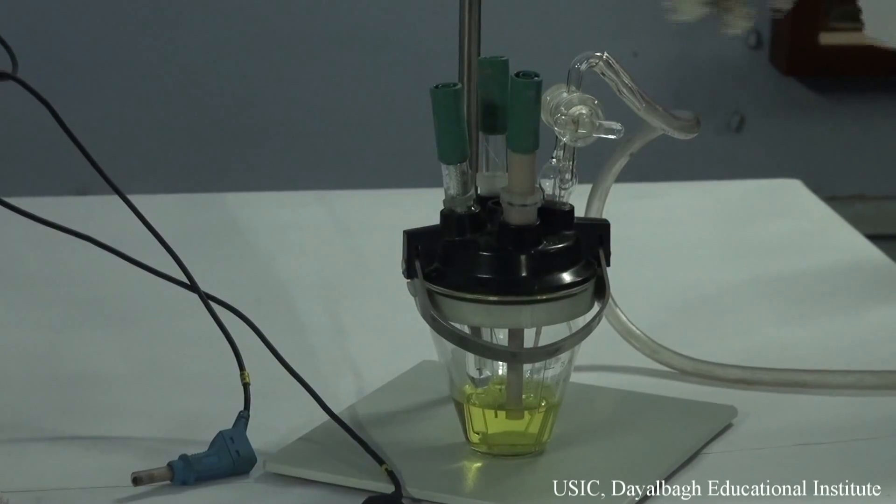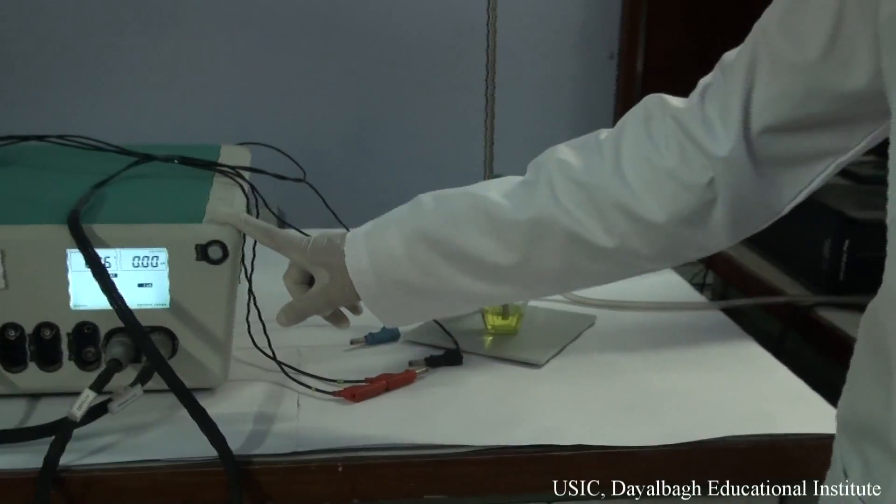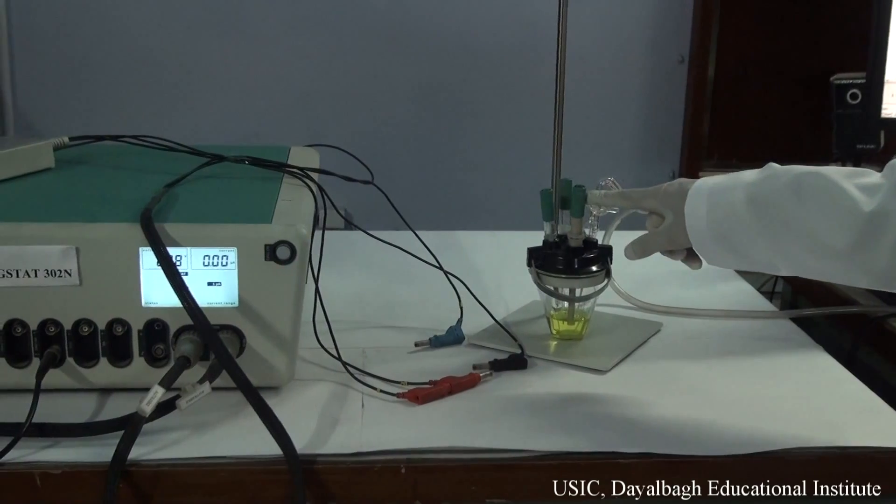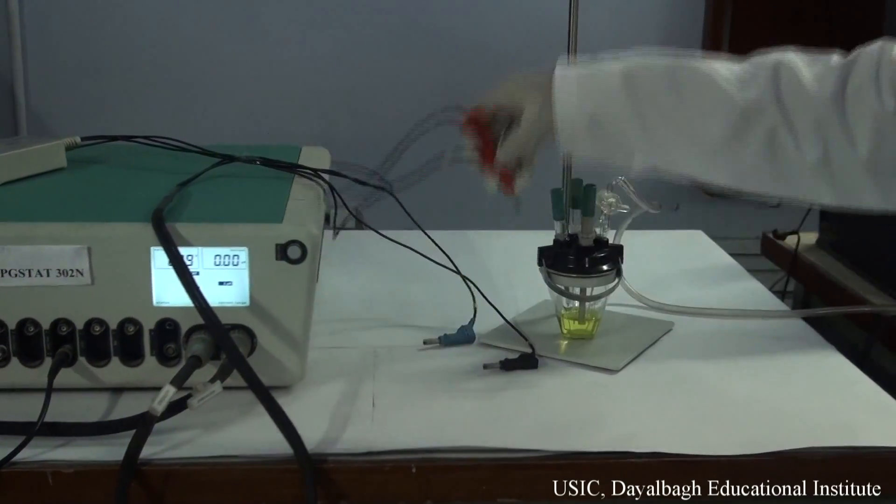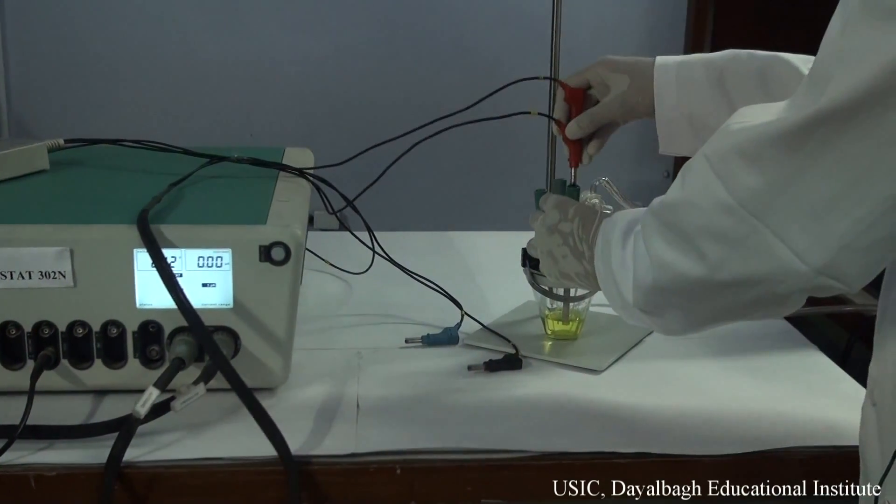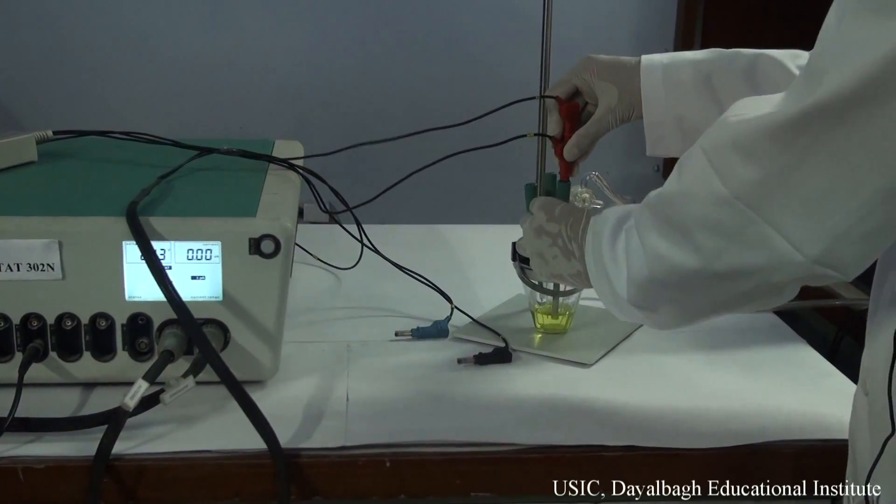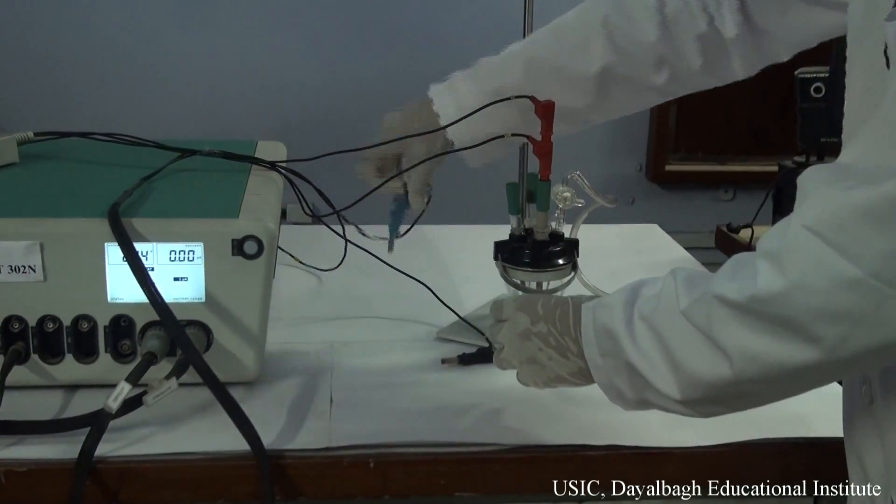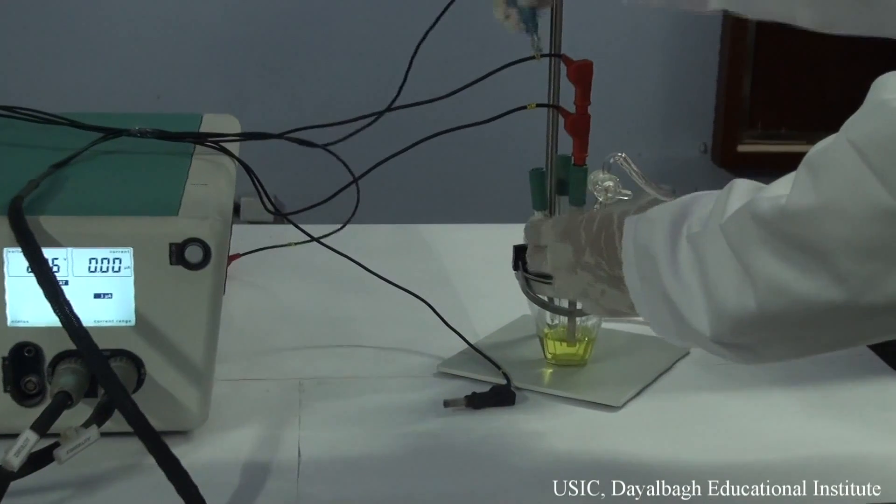Now we will make connections of the Autolab PG-Stat 302N with this electrode system. This is the working electrode. This blue one is for the reference electrode.